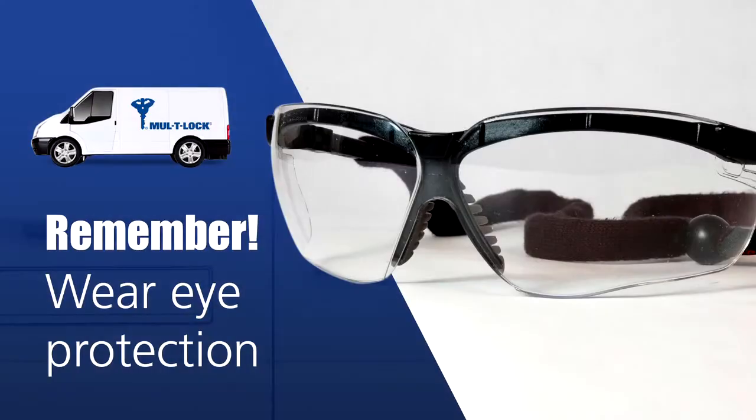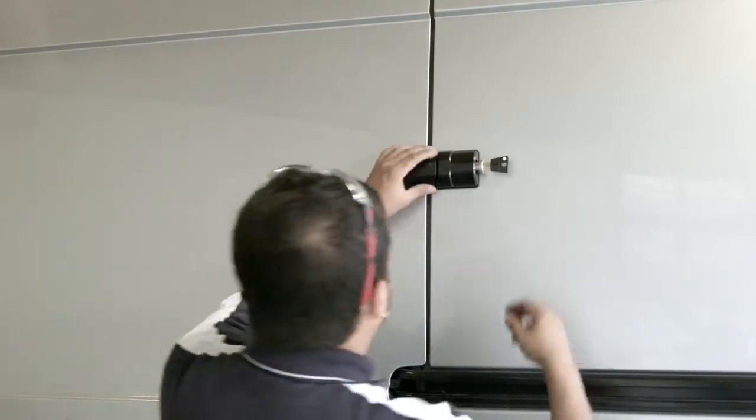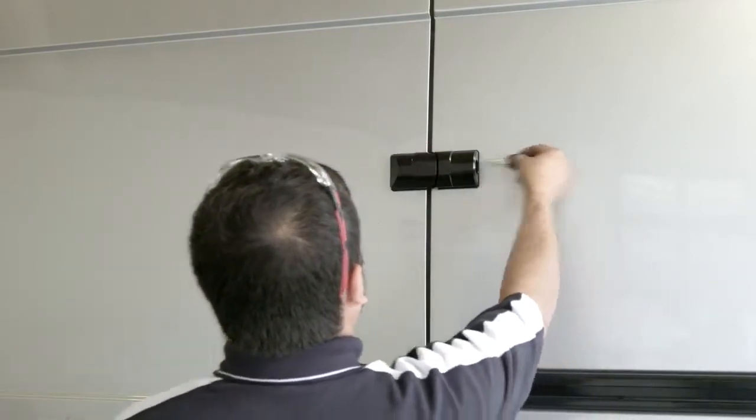During this installation, our installer will be wearing suitable eye protection when using the drill. Installing the Moltock Armoured Lock on a sliding side door. This side door armoured lock will always be installed on the rear edge of the sliding door.